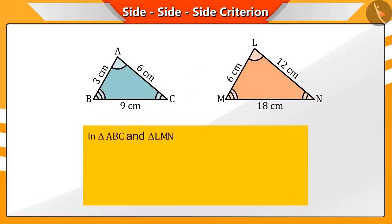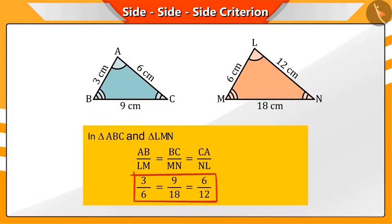If we look carefully, corresponding sides AB/LM, BC/MN and CA/NL, their ratios are equal to 1 by 2.